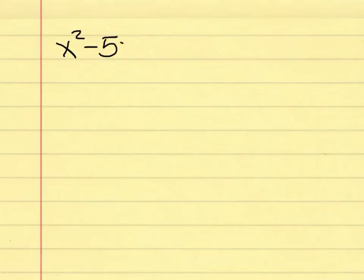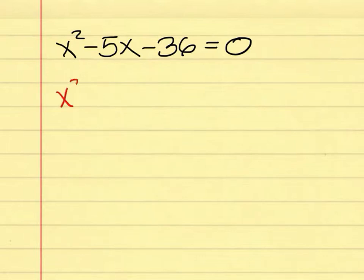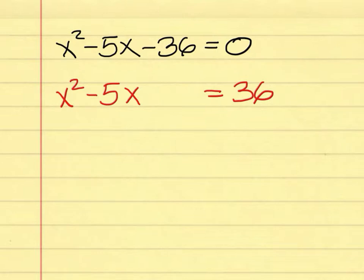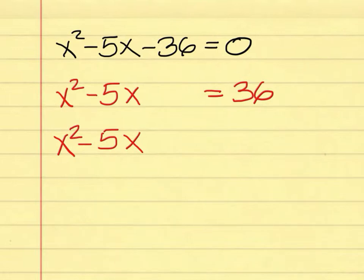Example number 2: the problem is x squared minus 5x minus 36 equals 0. Step 1 is to keep x squared minus 5x on the left and move the minus 36 to the right — change the sign. Next, you need half of this negative 5. Half of negative 5 means you're dividing it by 2, which gives you negative 5 over 2.